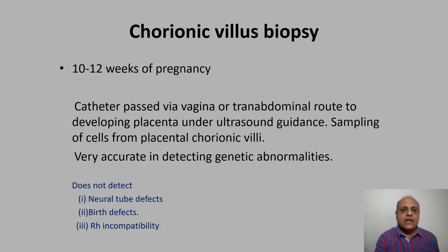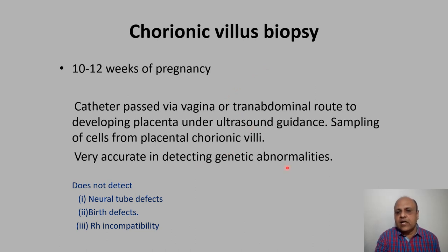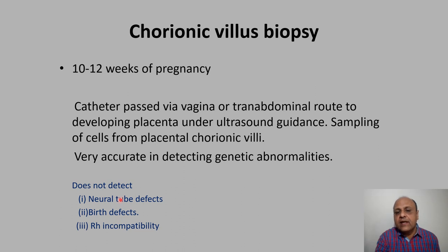Chromosomal analysis is done from the sample. Then there is chorionic villus biopsy, which is more accurate in detecting genetic abnormalities compared to amniocentesis. Another advantage is it can be done earlier — from 10 to 12 weeks of pregnancy. A catheter is passed either by vaginal or transabdominal route to the developing placenta under ultrasound guidance. However, this test does not detect neural tube defects, birth defects, or RH incompatibility — those require amniocentesis. The advantage of chorionic villus biopsy is that it can be done earlier and is very accurate in detecting genetic abnormalities.